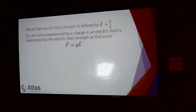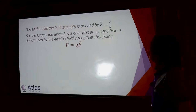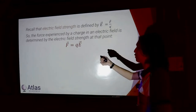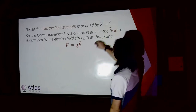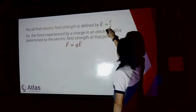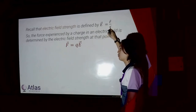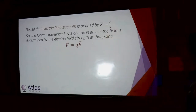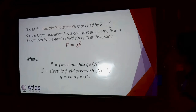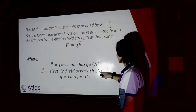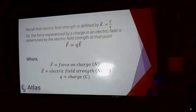First, recall that electric field strength is defined by E equals F on Q. So therefore, the force experienced by a charge in an E field is just F equals QE. Your syllabus doesn't actually write this, but it does write that. F is your electric force, Q is the charge, E is the electric field strength. If F is in newtons and Q is in coulombs, then E is in newtons per coulomb — that's your unit for electric field strength.